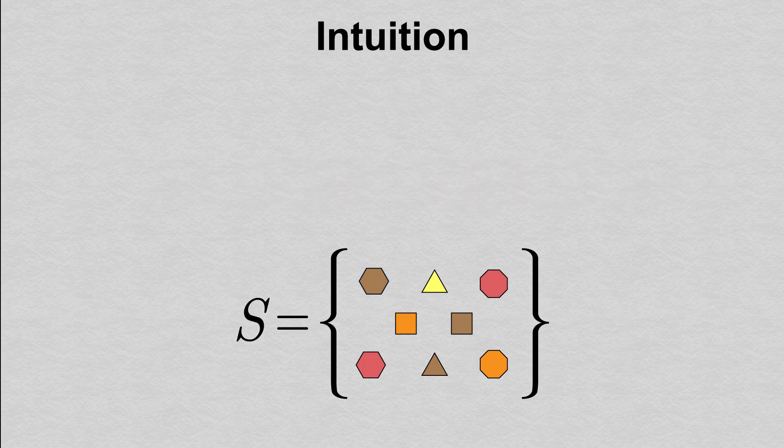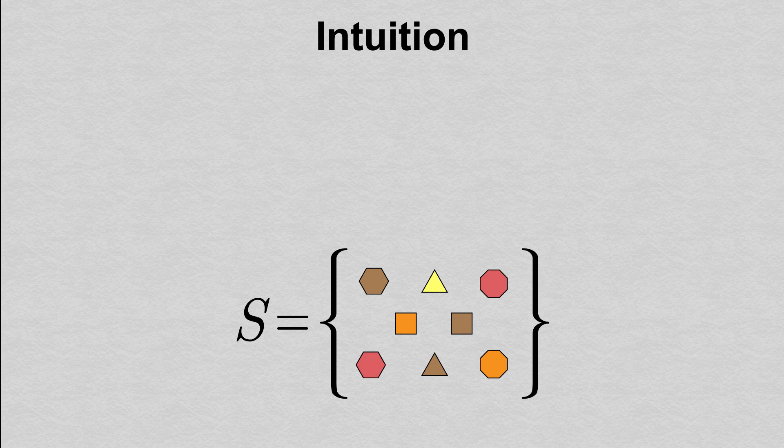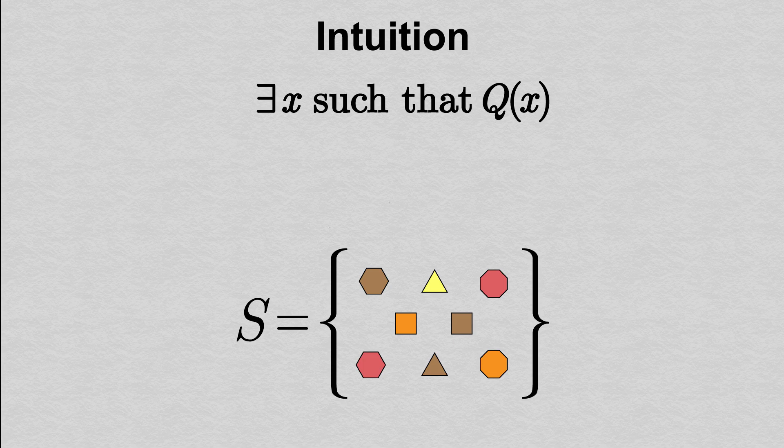A second thing we do in mathematics is to state that at least one object in some set has a certain property. For example, that there is a hexagon in our set S. We use the there exists statement to express this. There exists x such that Q(x) means that for at least one x, the statement Q(x) is true.